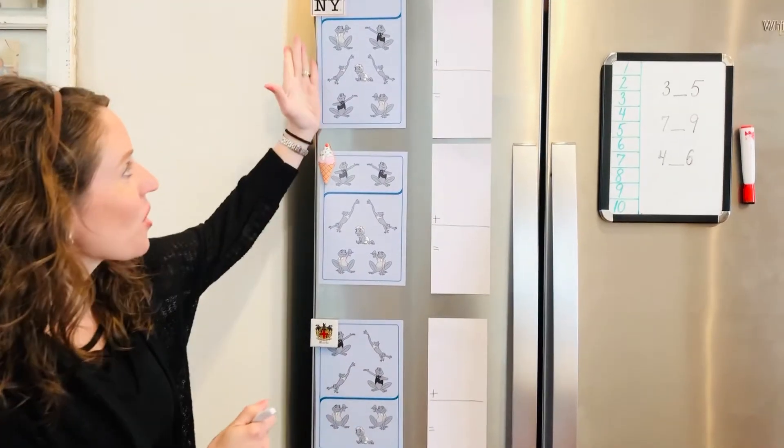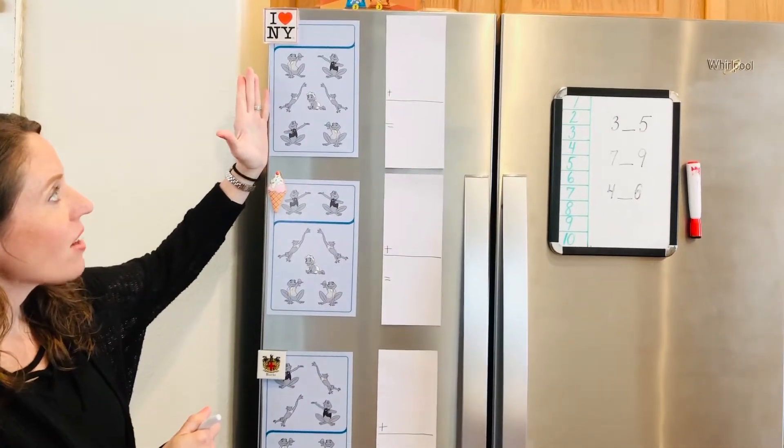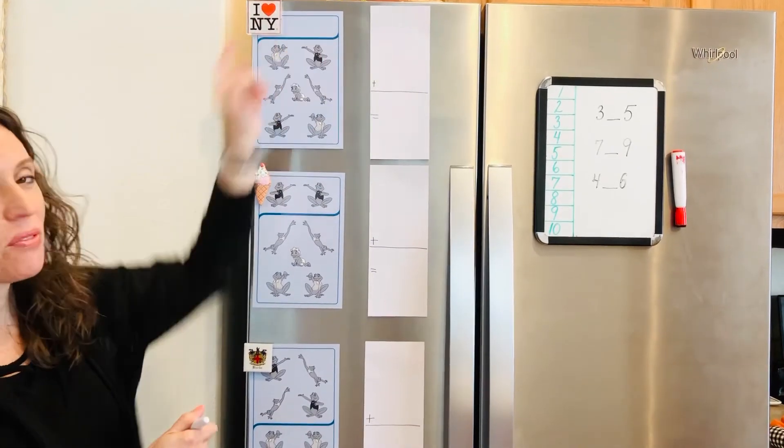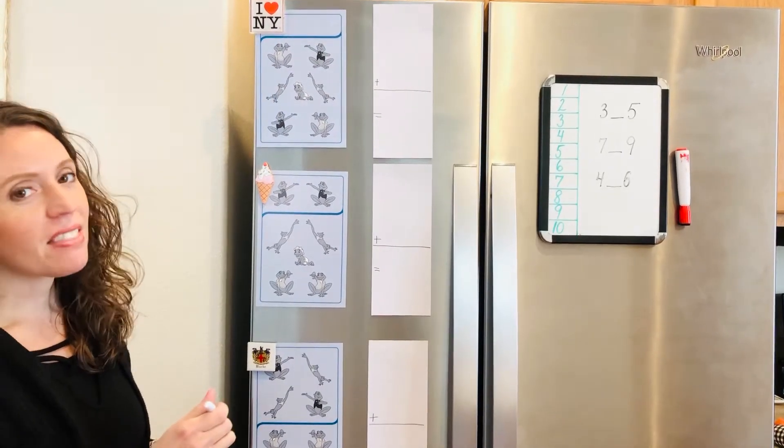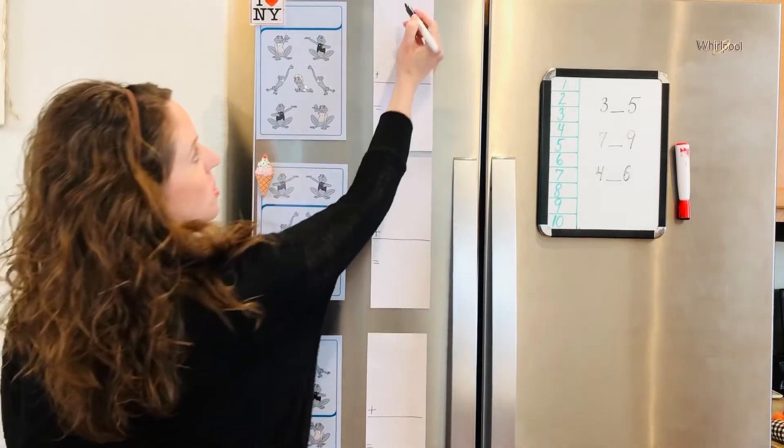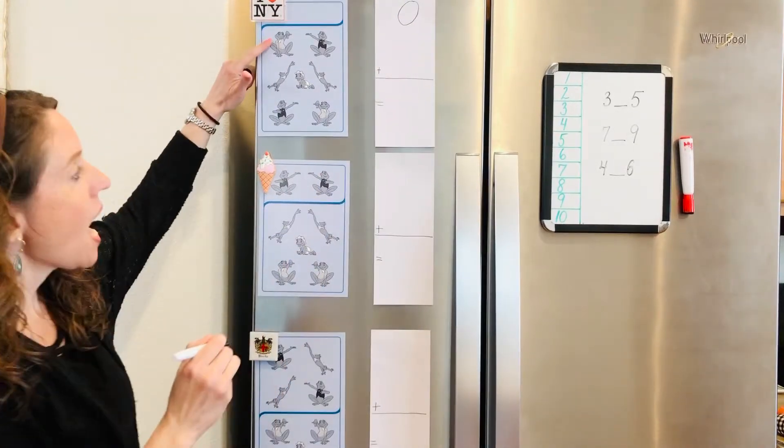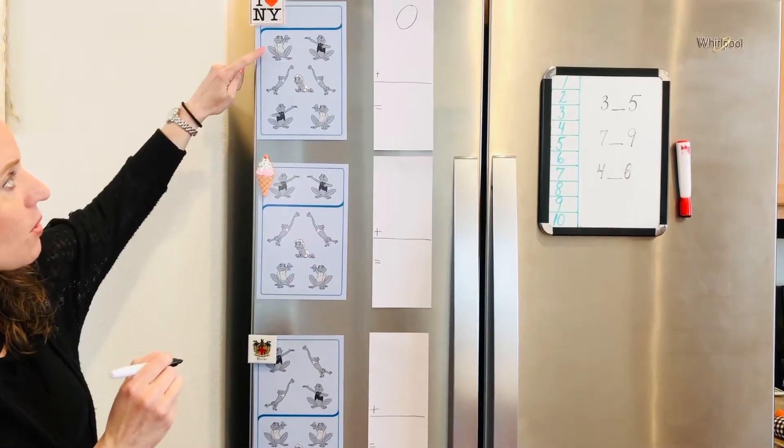Let's look at our first card with frogs on it today. Class, how many frogs are up at the very top? That's right, there are no frogs so we are going to write a zero here. Plus, how many frogs are here? Well, let's count them.